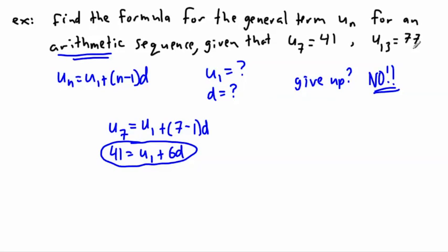Let's use this other equation here and see if we can do something with that one. I know that u13 will be equal to u1 plus 13 minus 1, because that's the 13th term I'm looking at here, times d. But I know u13, u13 is 77. So 77 equals u1 plus 12d. So this is all I know here.